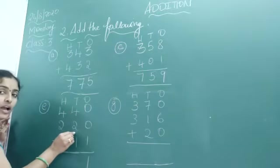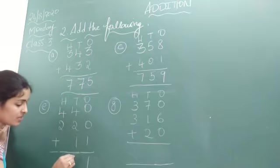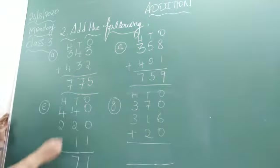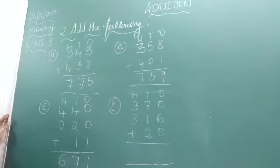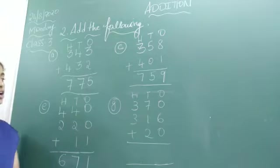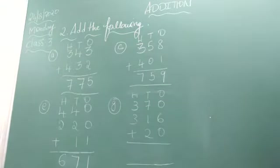4 plus 2 is 6, 6 plus 1 is 7. Now 4 plus 2 is how much? 6. So what is the required answer? 671.